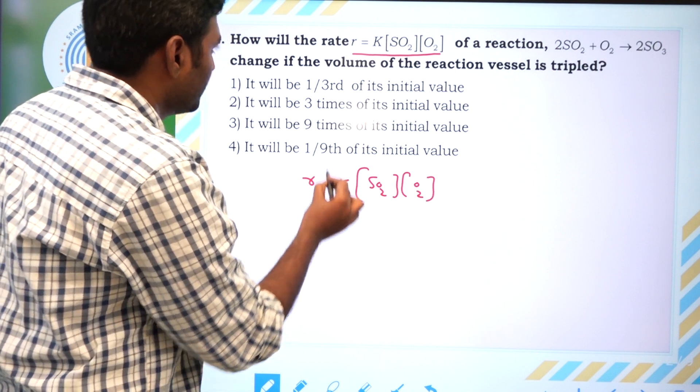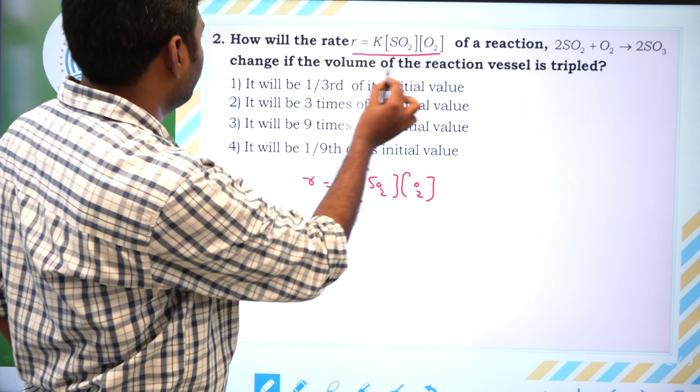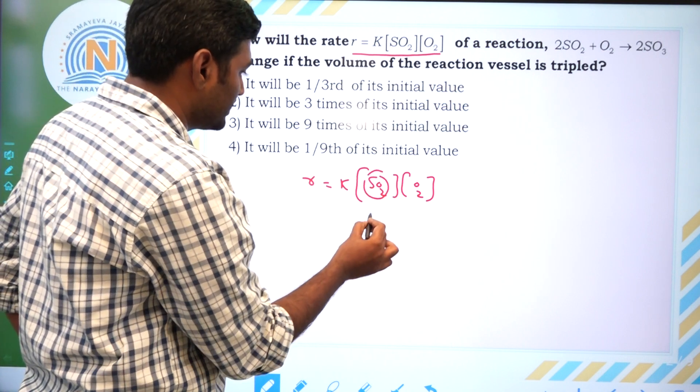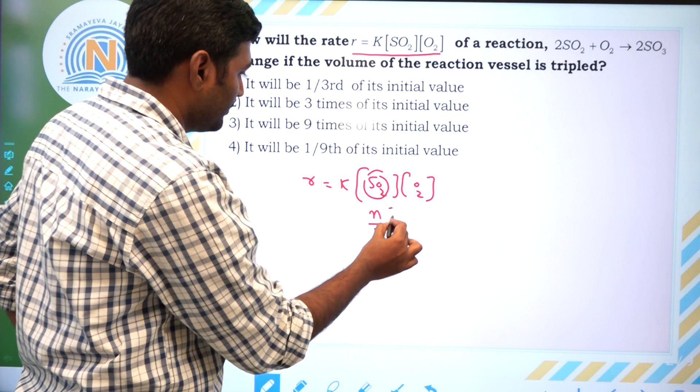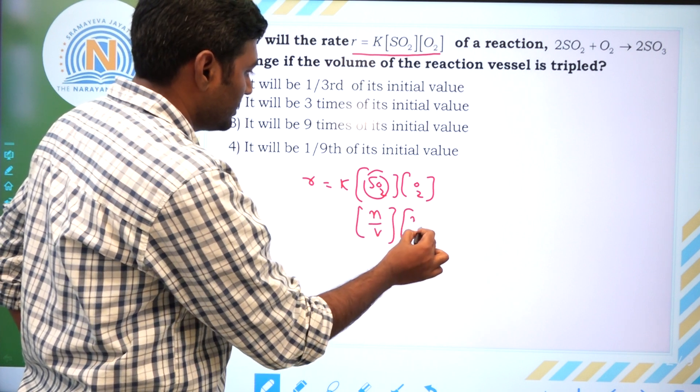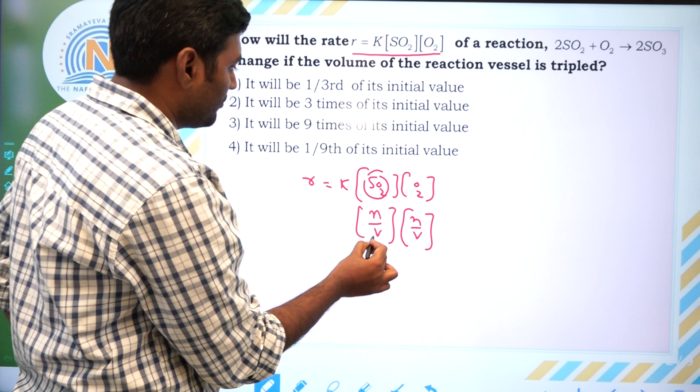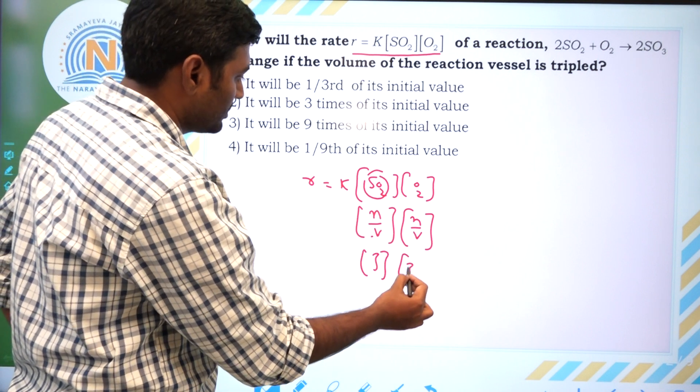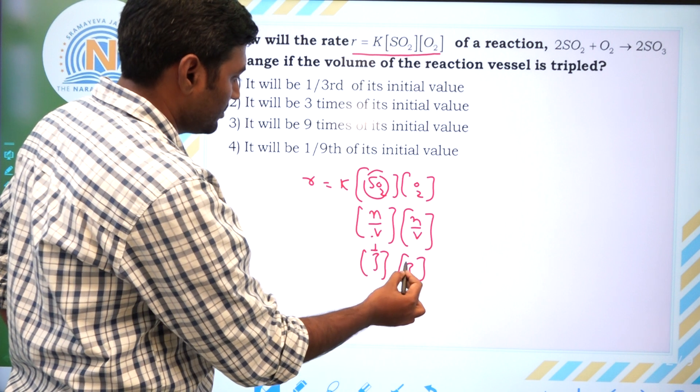For this reaction, if the volume is tripled, concentration is N by V. Here, it is N by V. If volume is tripled, concentration becomes 1/3. For the SO2 term squared, it means 1/3 squared, which is 1/9.